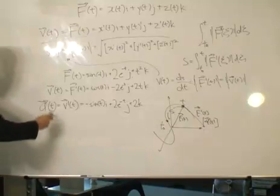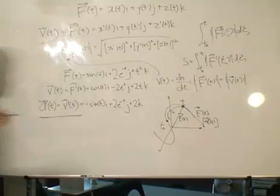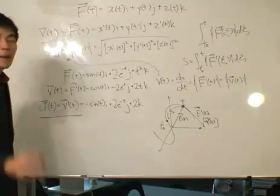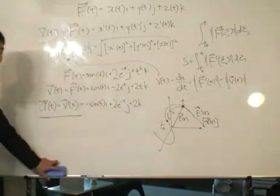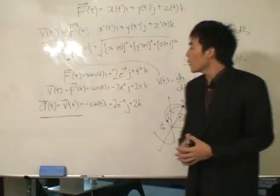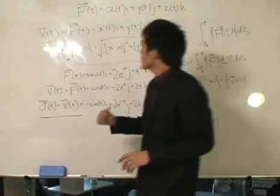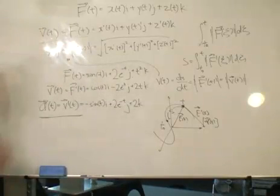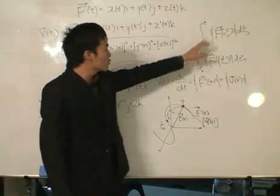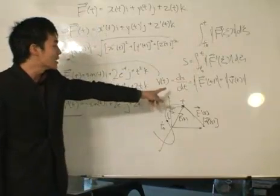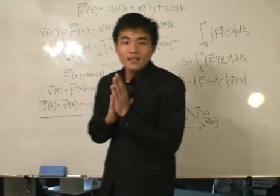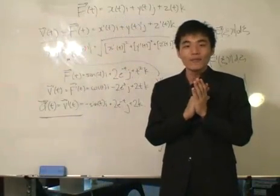We can show by intuition that acceleration is the first derivative of the velocity vector, and you will also get a vector as a result. So this section is all about defining the velocity vector as the first derivative of the position vector. The speed is the magnitude of the velocity vector, confirmed by differentiating the arc length. And the acceleration is the first derivative of the velocity vector. Get familiar with this concept because next we're going to deal with curvature.